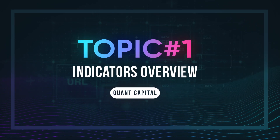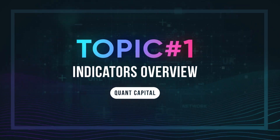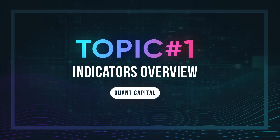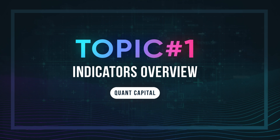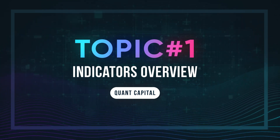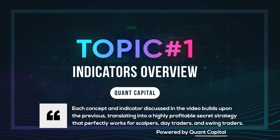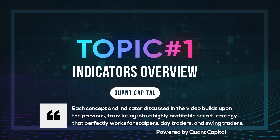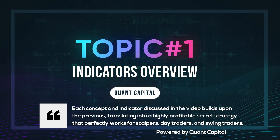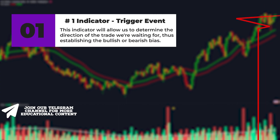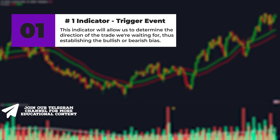In this video, we will take a look at two top-notch free indicators which deliver insane results in combination with each other. And more importantly, we will combine these indicators with price action concepts to receive insane performance. Each concept and indicator discussed in the video builds upon the previous. Classically, we initially consider the indicator which will allow us to determine the direction of the trade we're waiting for, thus establishing the bullish or bearish bias.